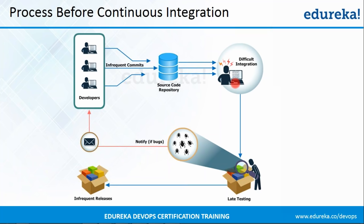If there's any bug in the code, developers are notified with the help of the feedback loop as you can see on the screen. And if there are no bugs, then the application is deployed onto the production server for release. You must be thinking that what is the problem with this process — this process looks fine. As you first write the code, then you build it, then you test it, and finally you deploy it.